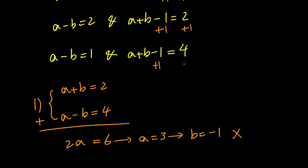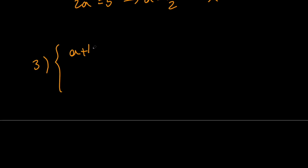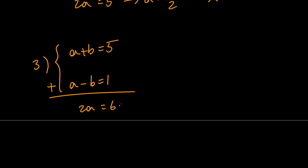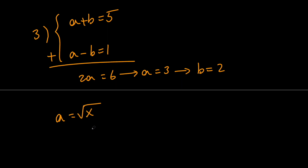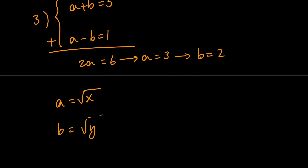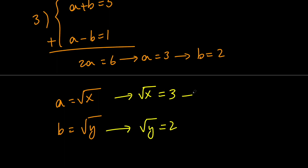In the last case, if we add one to both sides we get a plus b equals 5, and we know a minus b equals 1. Adding these eliminates b and gives 2a equals 6, which means a equals 3 and b equals 2. Remember we wanted x and y: since a equals root x and b equals root y, root x equals 3 and root y equals 2, which means x equals 9 and y equals 4.